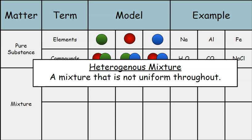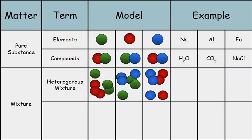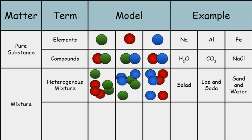This is a mixture that is not uniform throughout. Because this mixture is not uniform throughout, we can actually tell that there's different parts that make up this mixture. Some examples include salad, ice and soda, sand and water.